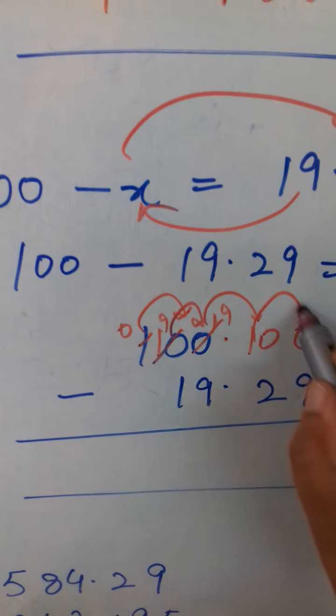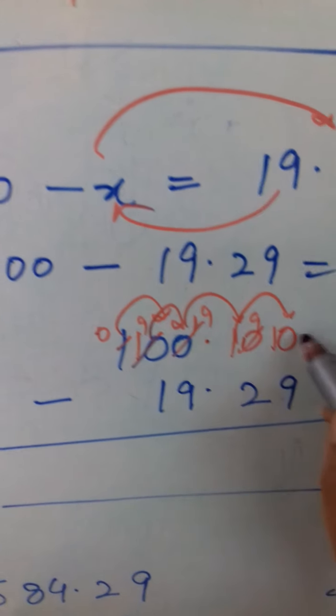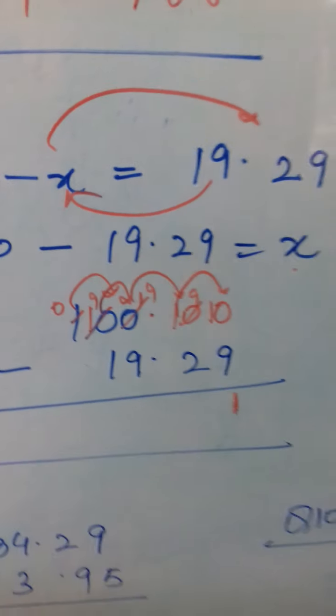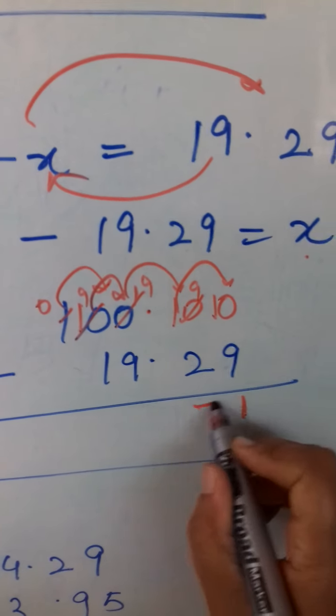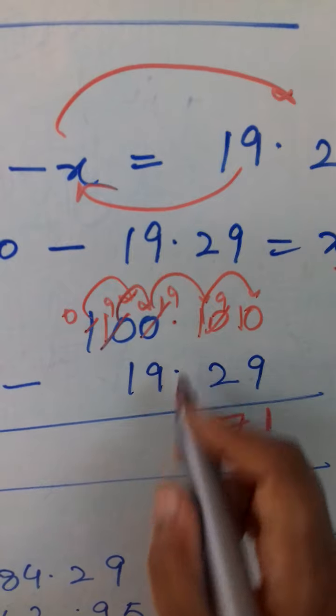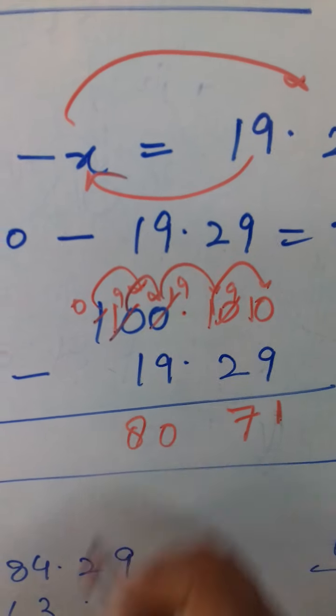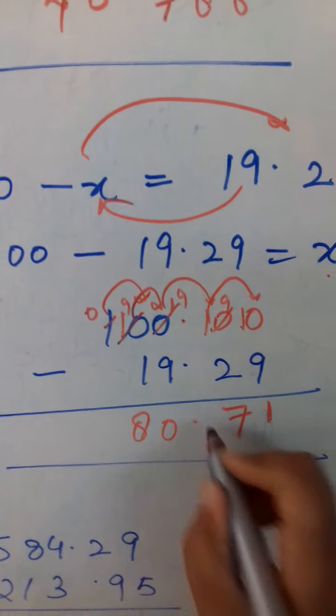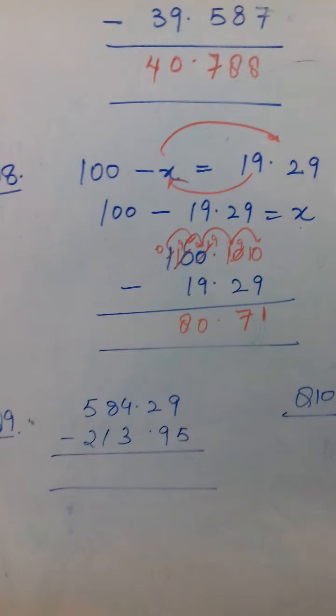So 9 is here and 10 is here. And this 10 will give it to this 10. So 10 minus 9 is 1. And 9 minus 2 is 7. 9 minus 9 is 0. And 9 minus 1 is 8. And decimal will come below the decimal. So 80.71.